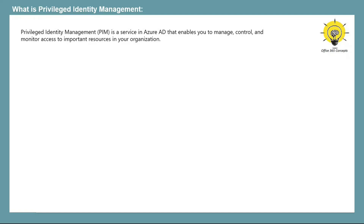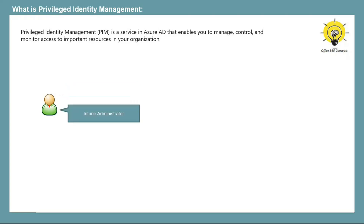Let's consider one example where we assign roles to users in our organization. In order to manage certain resources, an administrator needs dedicated roles to be assigned. For example, if an administrator wants to manage users and groups, he would require the User Administrator role. Or if an administrator has to manage the Microsoft Intune portal, he would require the Intune Administrator role. When these permissions are assigned to users or administrators, they are assigned permanently — meaning until another administrator removes these permissions, the administrator will have access to these roles and all associated resources.